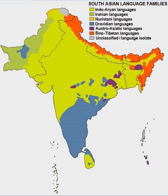Among Indian languages, Tamil has the most ancient non-Sanskritized Indian literature. Scholars categorize the attested history of the language into three periods: Old Tamil, Middle Tamil, and Modern Tamil.